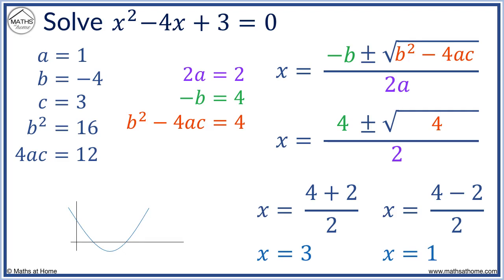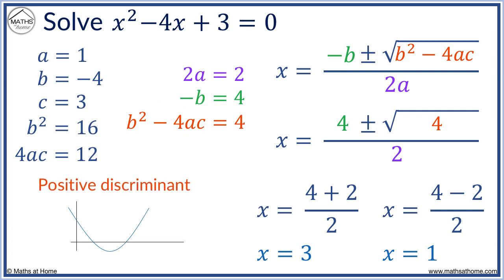We have two solutions, and the graph looks like this. The discriminant of b squared minus 4ac was equal to 4, which is positive. We could square root it. We have one solution here and one solution here. If the discriminant is a positive number, we have two solutions, which are where the quadratic graph crosses the x-axis.